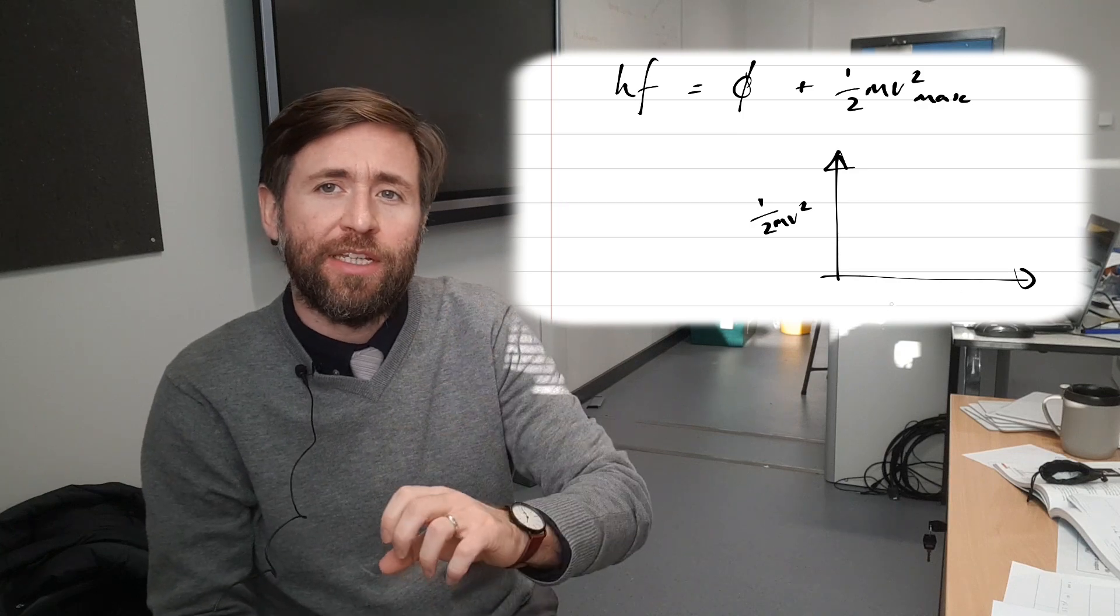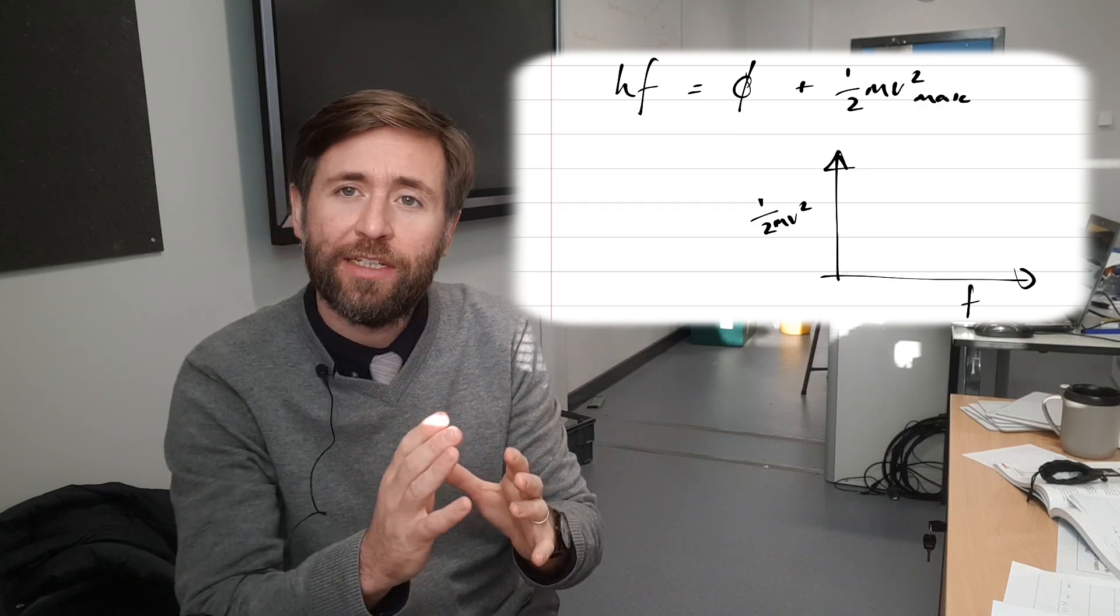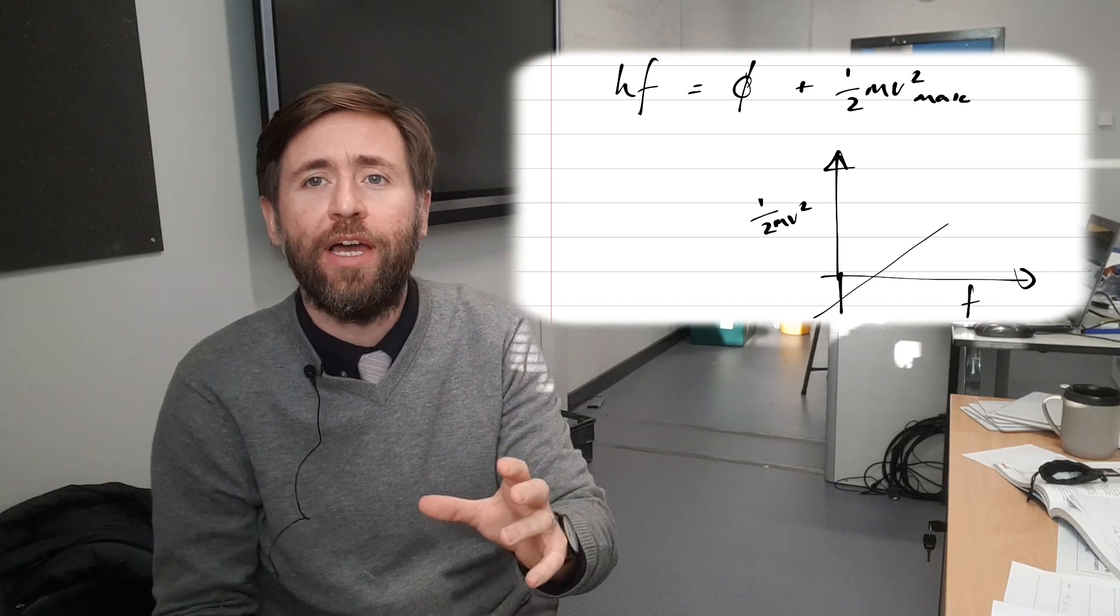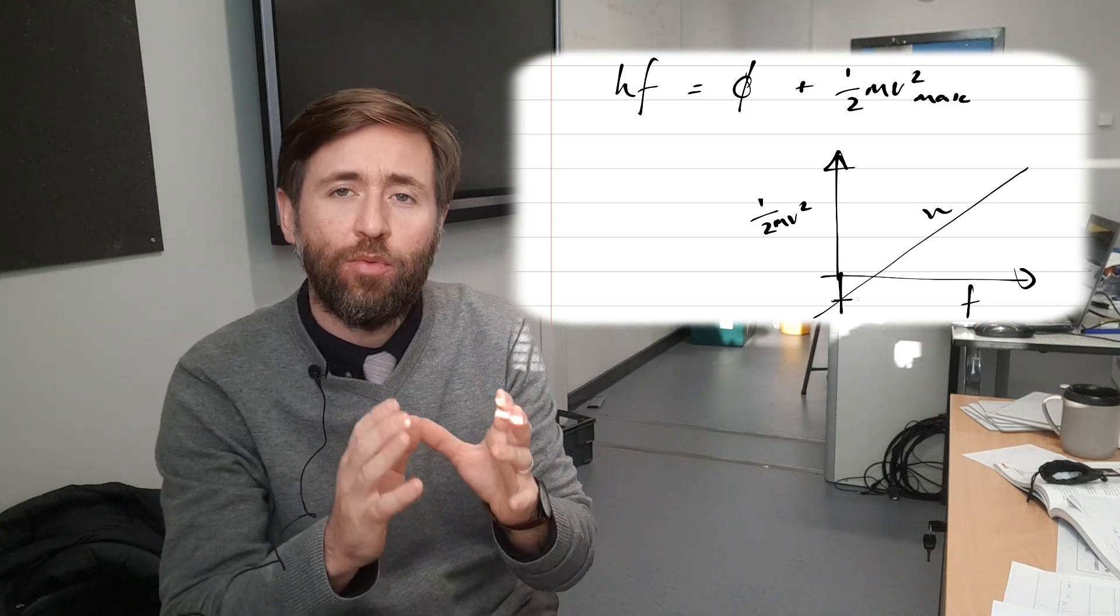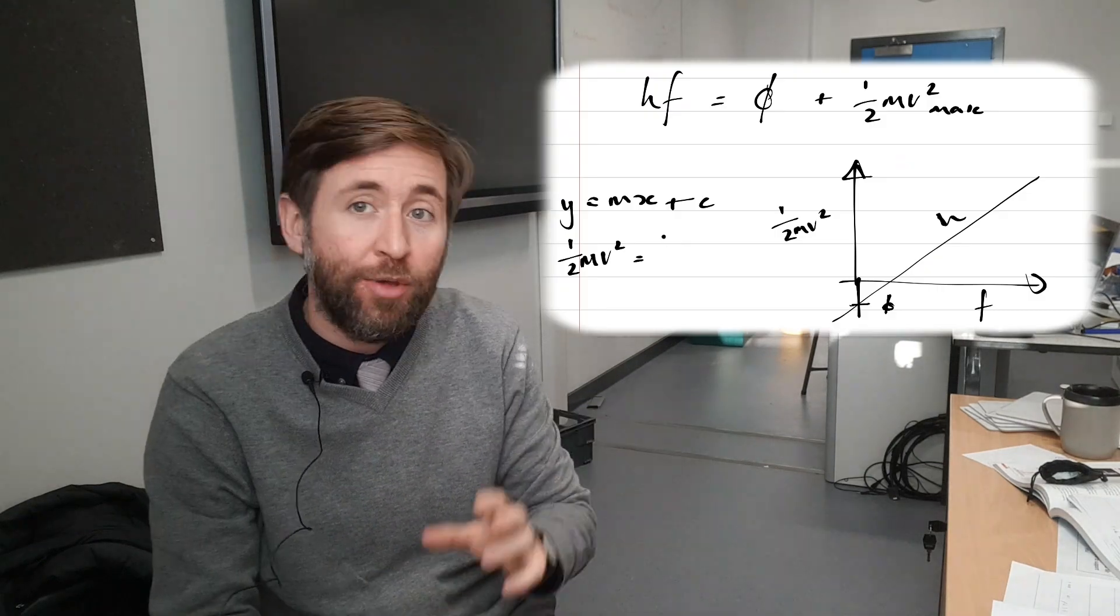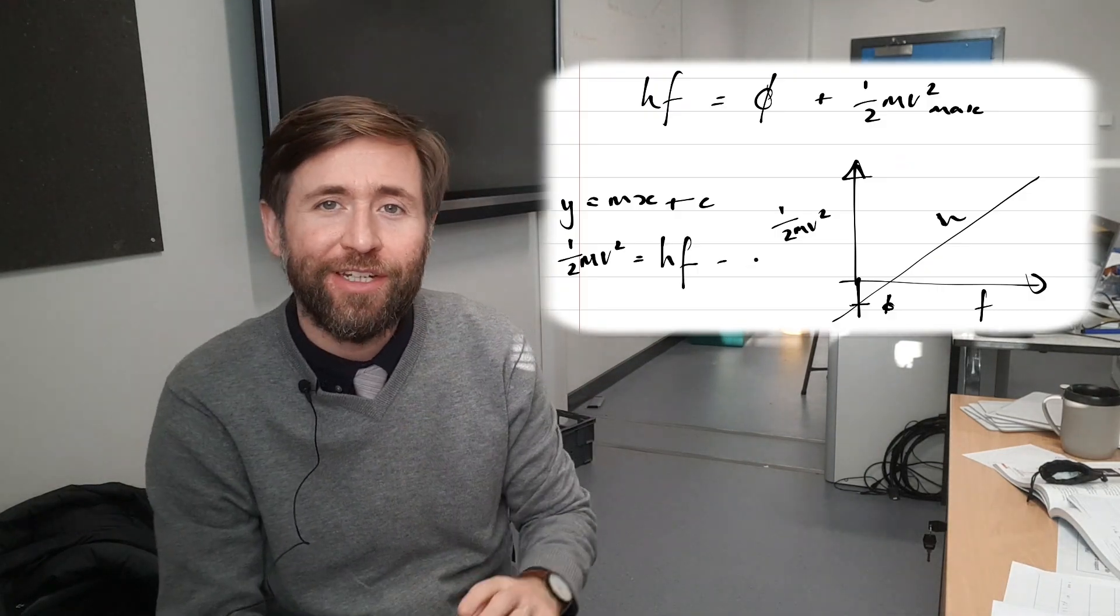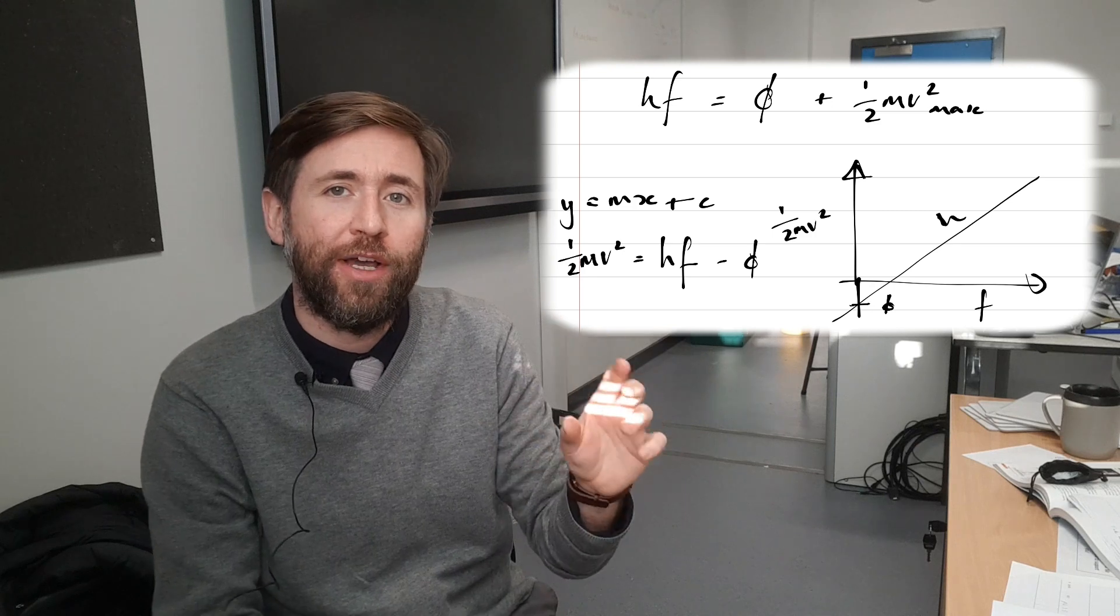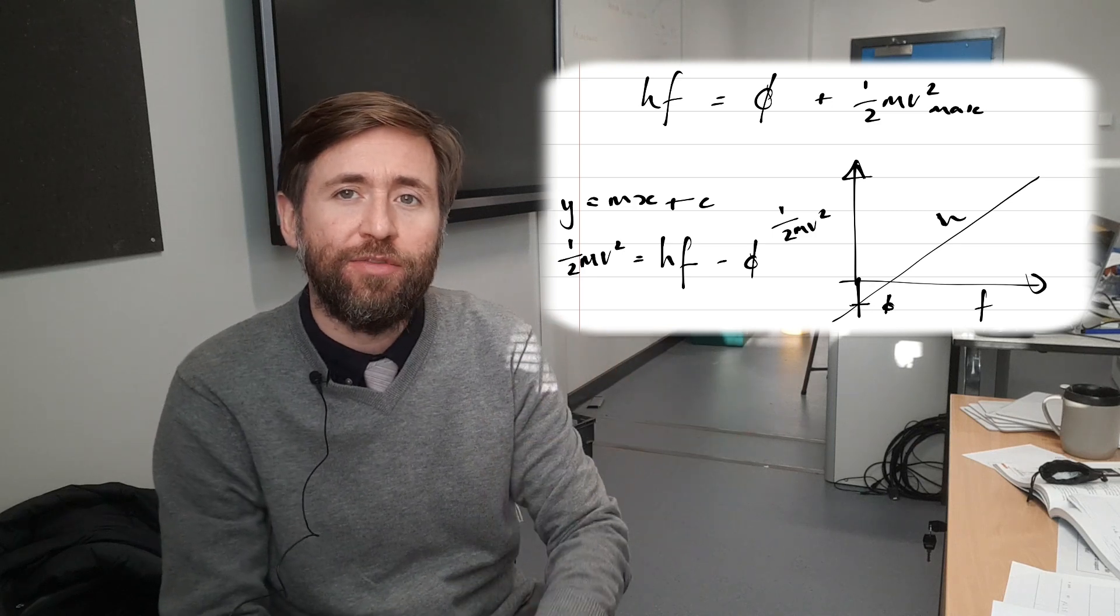And what is the intercept? Well, the intercept is the work function because it intercepts the y-axis. That y-axis intercept is the work function, the energy needed just to release the electrons in the first place. I hope you can see how just with some simple rearranging, we can make this equation into the form y equals mx plus c. That's a straightforward one.